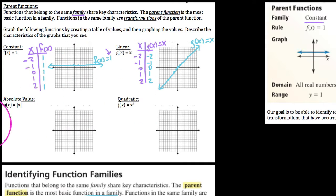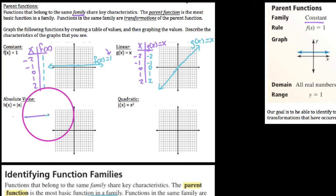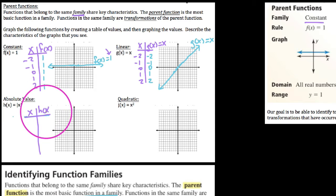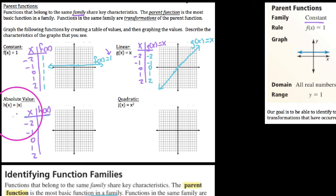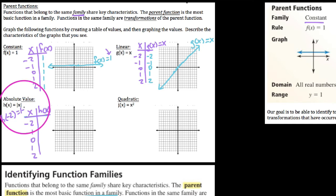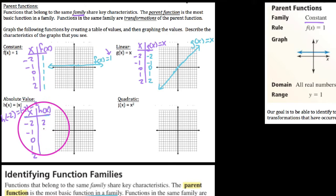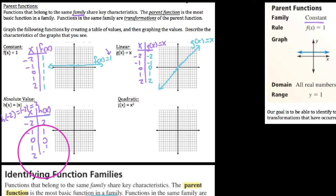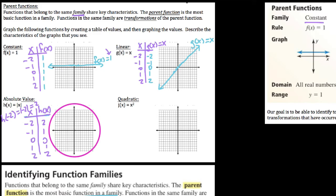Let's inspect our absolute value function. Recall what we mean by absolute value — it is asking how far that value is from zero on the number line, and distance is never negative. So h of negative two is really the absolute value of negative two, which is just two, because two is two units away from zero. So our outputs for inputs negative two, negative one, zero, one, two are: two, one, zero, one, two respectively. This is very similar to a linear function, except all our outputs happen to be positive.